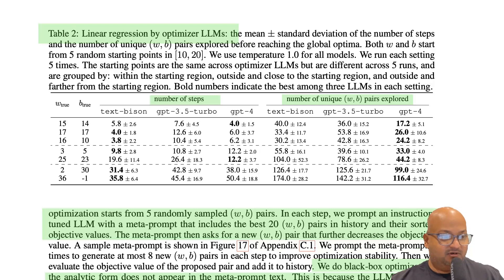Here they plot the number of steps that they had to iterate with this prompt, as well as the number of unique points in 2D space that were explored. And they do this for various values of W and B. And you can see that with GPT-4, for example, for most values of W and B, it took somewhere between 4 and 12 steps. And it explored 20 to 40 points in the space before it found a global optimum.